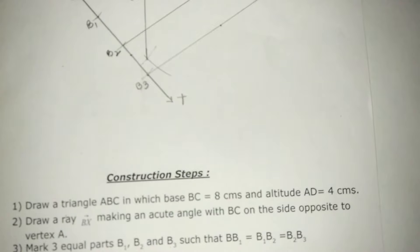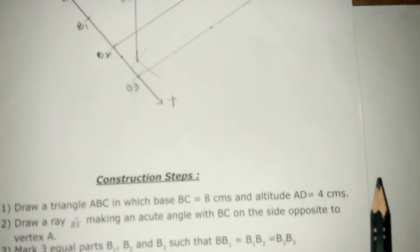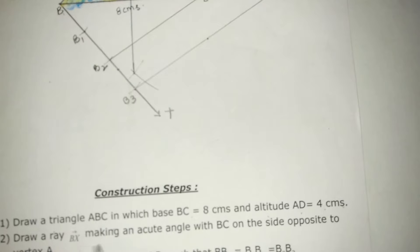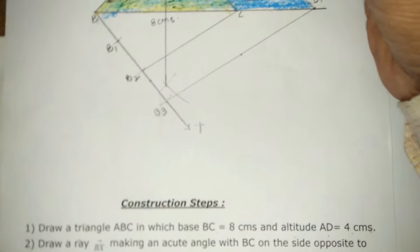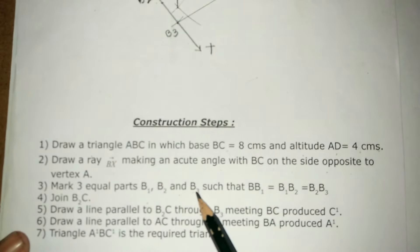Let me see the construction steps. First we draw a triangle ABC in which base BC is 8 cm and altitude AD is 4 cm. Draw a ray BX making an acute angle with BC on the side opposite to vertex A. Mark 3 equal parts B1, B2, B3 such that BB1 is equal to B1B2 is equal to B2B3.